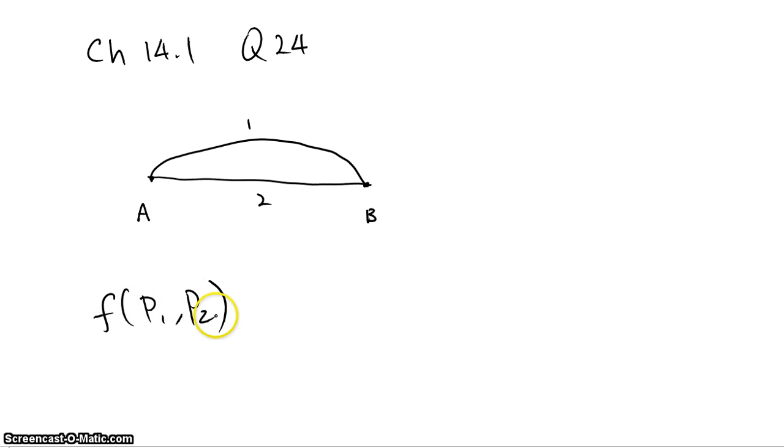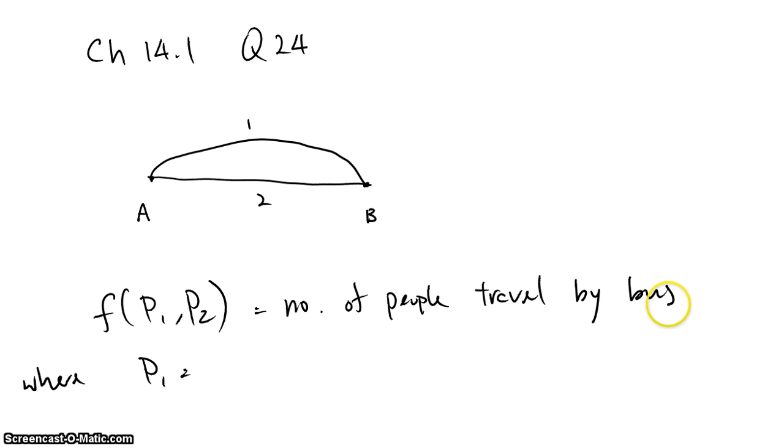Where P1 is the price of the bus and P2 is the price of the train. The function f(P1, P2) is actually the number of people who travel by bus, where P1 is the price of bus and P2 is the price of train.